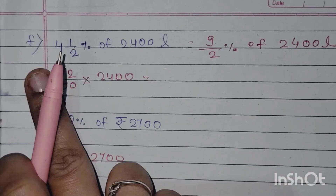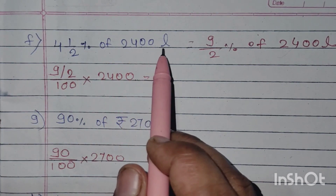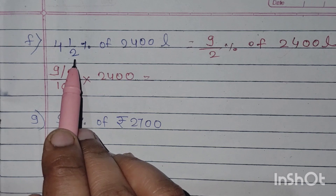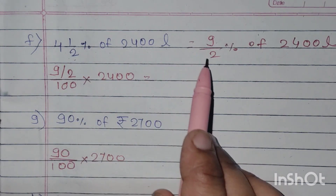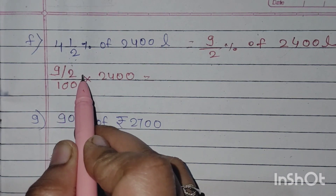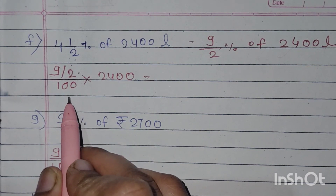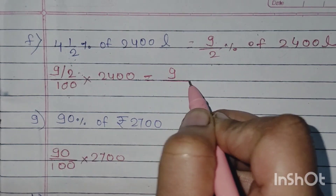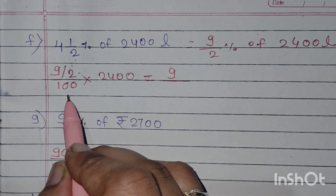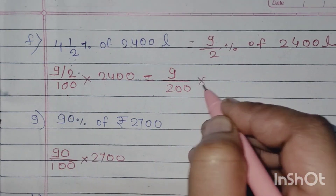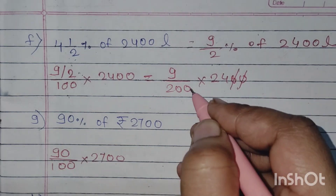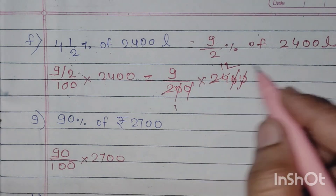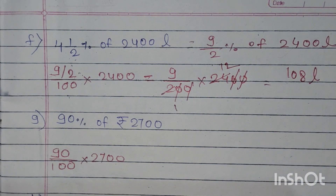Example: 4½% of 2400 litres — यह mixed fraction है, तो पहले आपको convert करना पड़ेगा। 4 into 2 is 8, उसमें 1 add करना है, तो 9 upon 2. तो 9 upon 2 यह percent है, इसलिए ऊपर नंबर लिखा और नीचे 100, जैसे हम हमेशा करते हैं। लेकिन इसमें यह 2 नीचे चलाएगा, तो 2 into 100 हो जाएगा 200. आगे zeros cancel, 2 बनजा 2, 2 into 12 is 24, और 12 into 9 is 108.